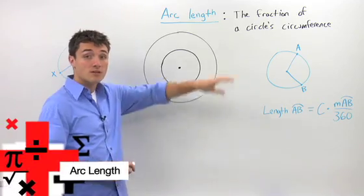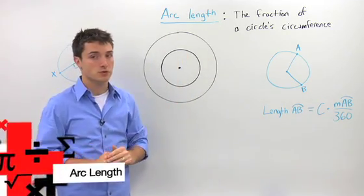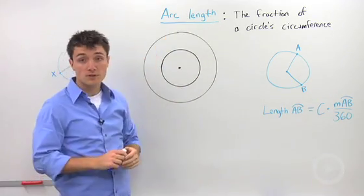There are two properties when we're talking about circles that are easily confused: arc length versus arc measure.